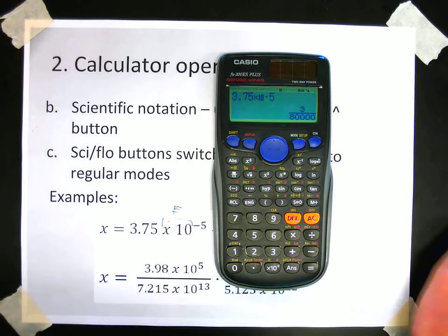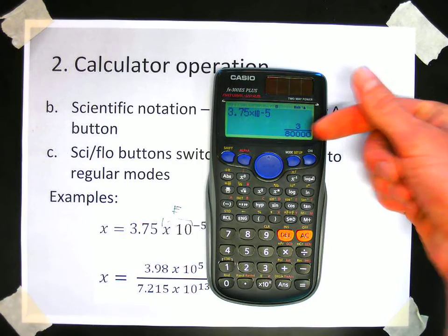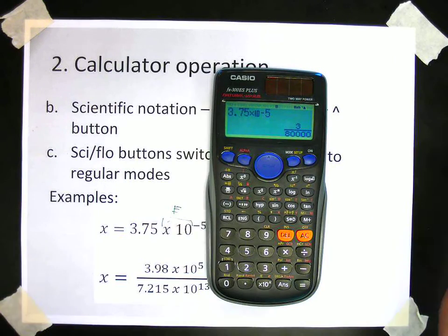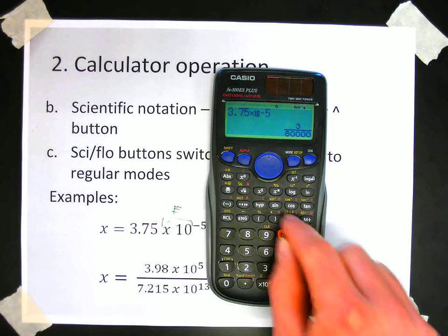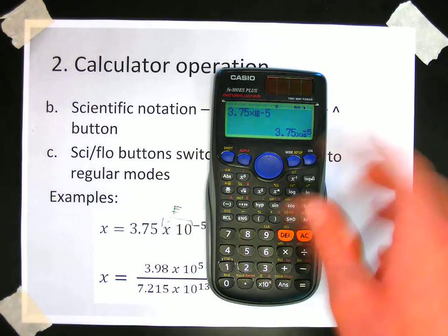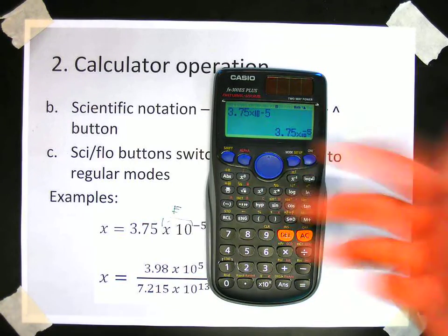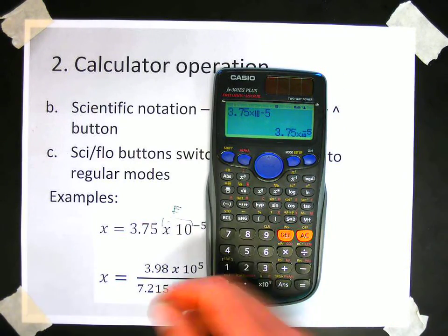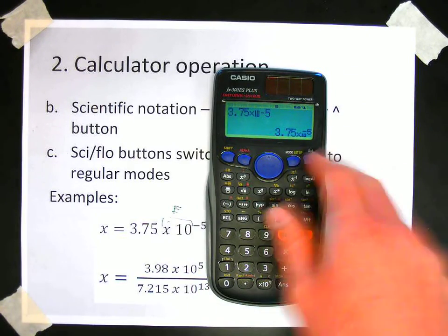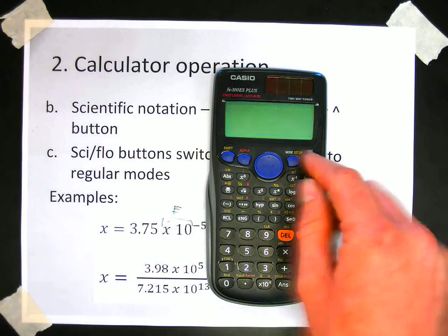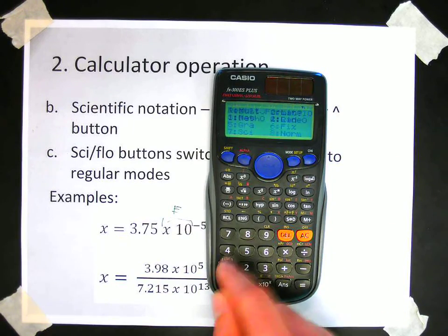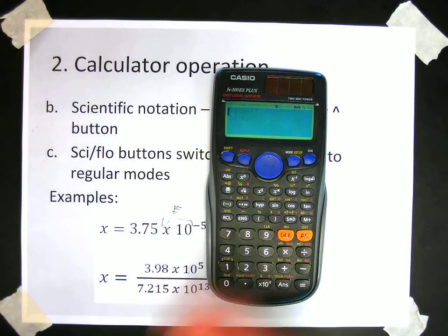Something interesting about these Casios is that they are defaulted to do the fraction mode. There's a couple of ways to fix that. One is to press this button right here. And that will switch between the fraction and decimal mode. Most of the time for science, we are using decimals instead of fractions. Another way to fix that is to change the mode so that it defaults to decimals. So to do that, you could go to shift, mode, press 1, then go to number 2.